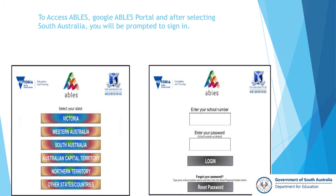To access ABLES, the best way to do that is to Google ABLES portal, and you will then get directed to the first screen, which will ask you to select the state that you're living in. We select South Australia, which will then take us to the next screen which shows us where you need to enter your school number. To access your school number, you will need to contact Rachel at CIRU. My email will be on the last slide, so please select my email, send through your details, and I will send you a link with your school number and password.